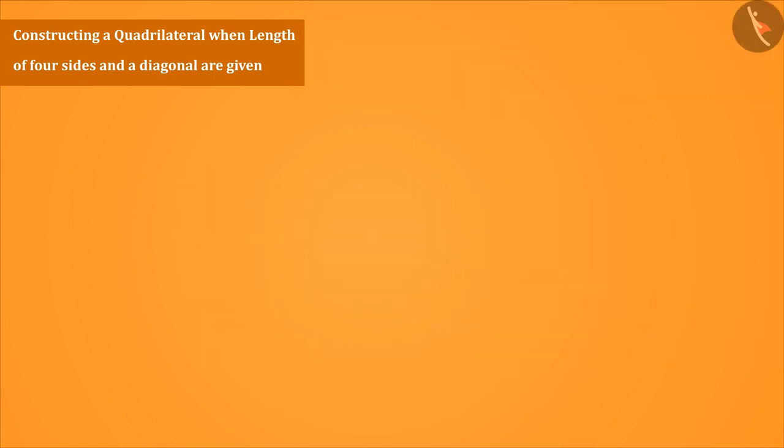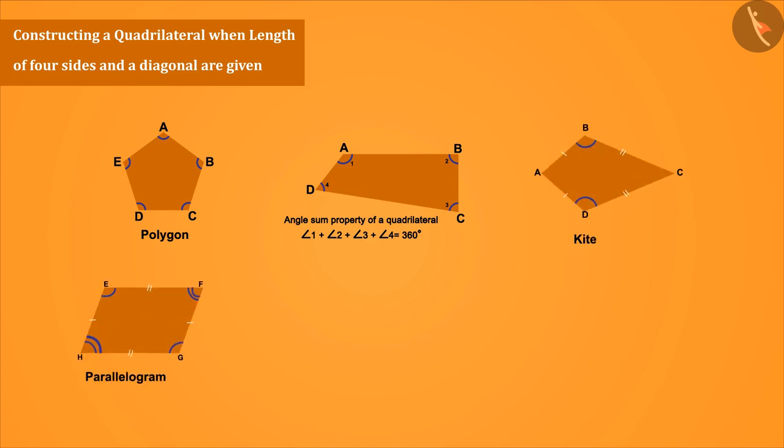So far we have learned about polygons, angle sum property of quadrilateral and different quadrilaterals: kites, parallelograms, rhombus, rectangles and squares.